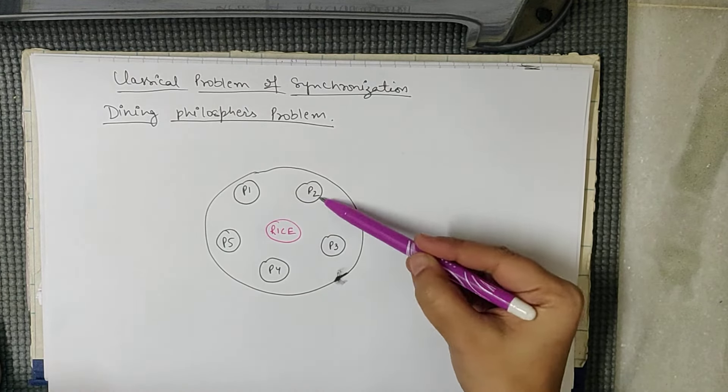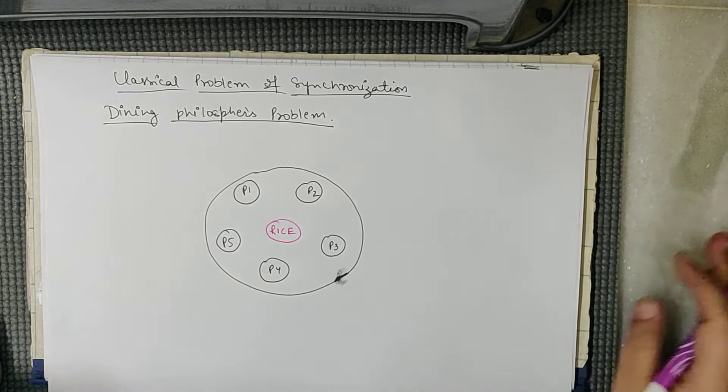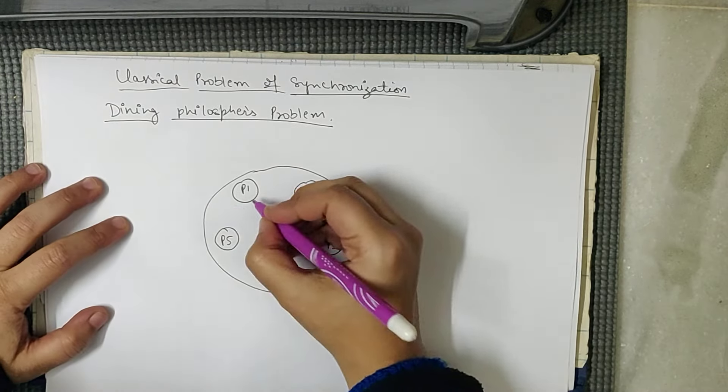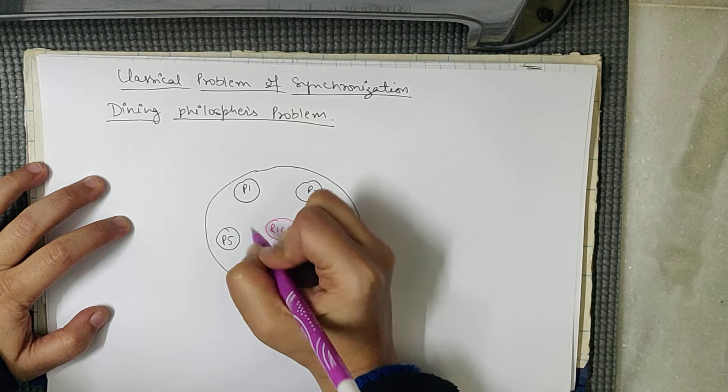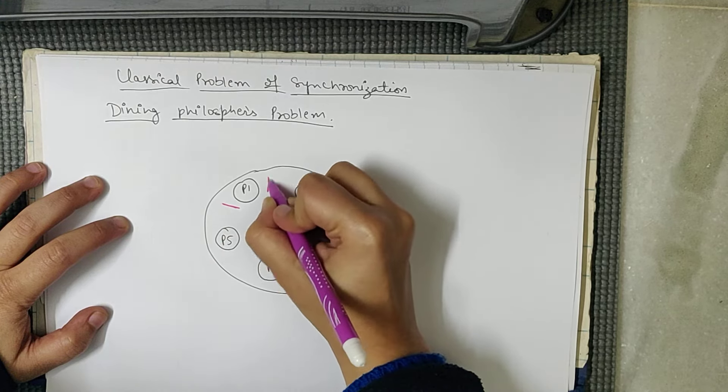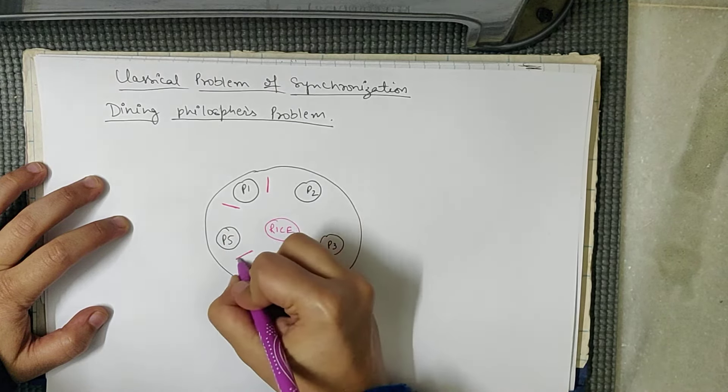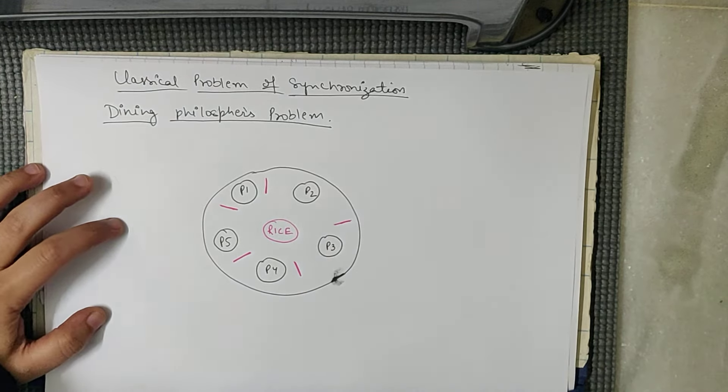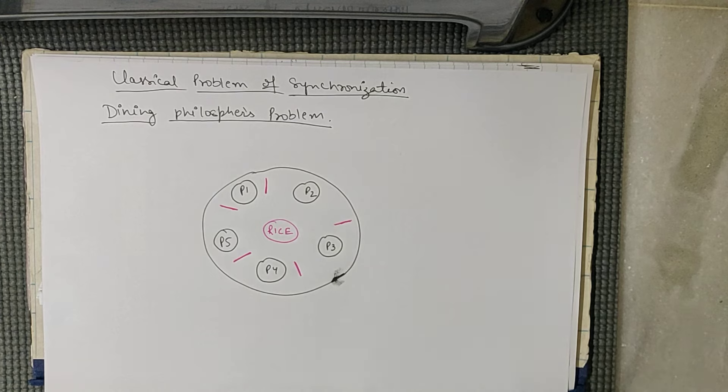This is P1, P2, P3, P4, P5, five different persons. Now there are forks on the left and right. There are forks here, one fork and the other fork here on the left and right. There are forks here on the left and right, there are forks here on the right.